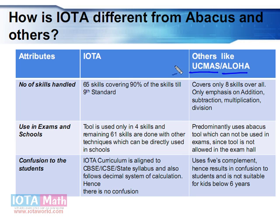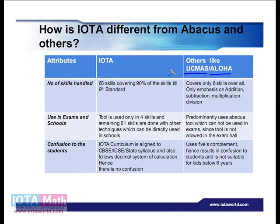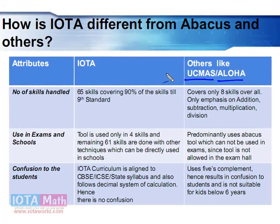The first thing to notice is that IOTA is a complete math system — it is not an Abacus system. We use more than 40 learning models to teach children mathematics, while UC Maths and Aloha curriculum is based on just one Abacus tool, which is just one tool in our system. That is the first major difference.